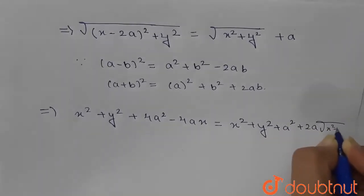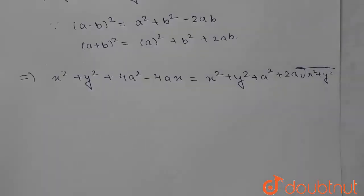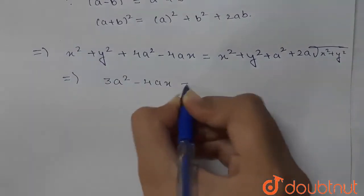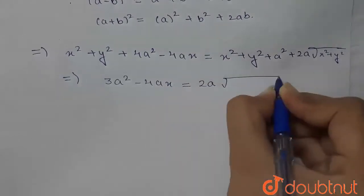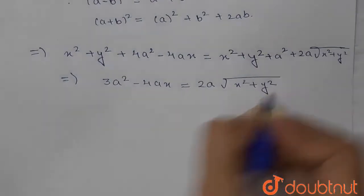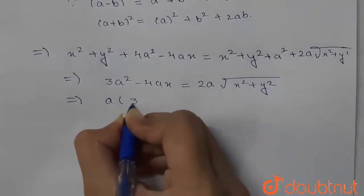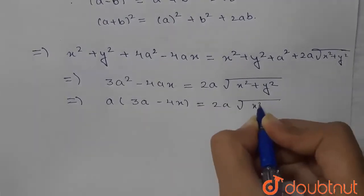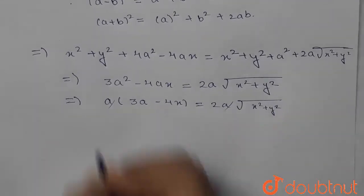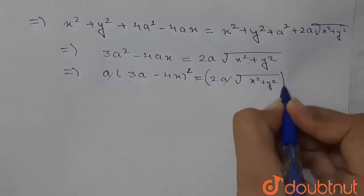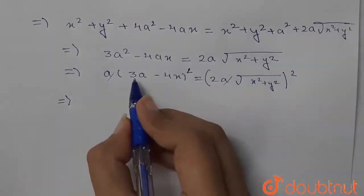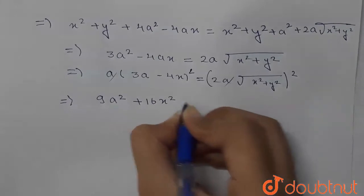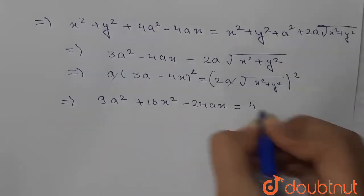On simplification, we get 3a² − 4ax = 2a√(x² + y²). Taking a common: a(3a − 4x) = 2a√(x² + y²), so the a's cancel giving 3a − 4x = 2√(x² + y²). Squaring both sides again and expanding (3a − 4x)² using the (a − b)² identity gives 9a² + 16x² − 24ax = 4(x² + y²).